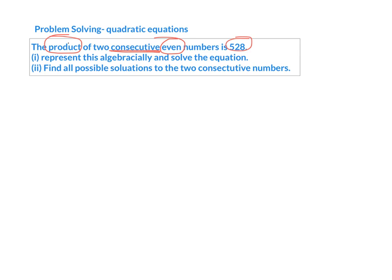We need to represent this algebraically and solve the equation, and we need to find all possible solutions to the two consecutive numbers. So straight away, what does product mean? Product means when things are multiplied. So we're thinking about multiplication first of all.